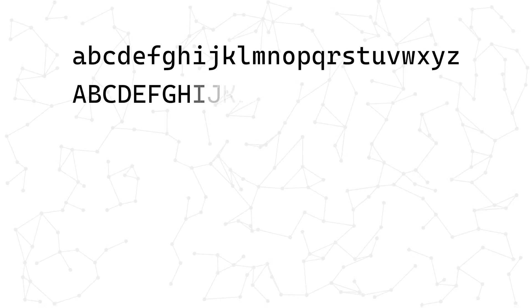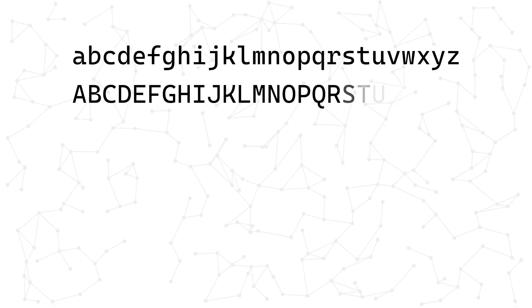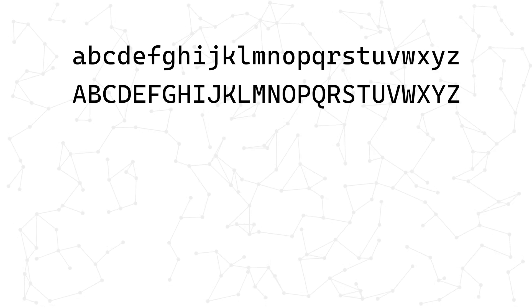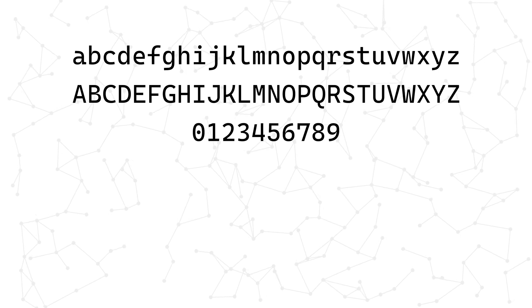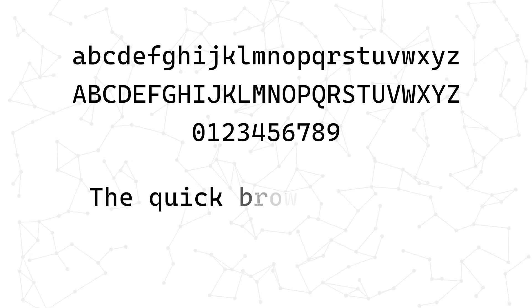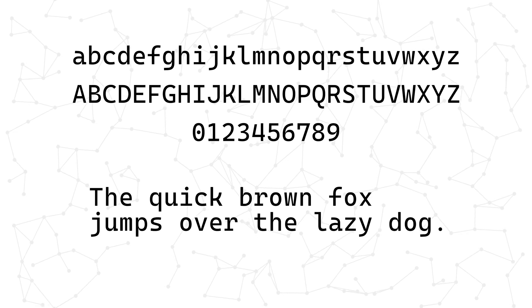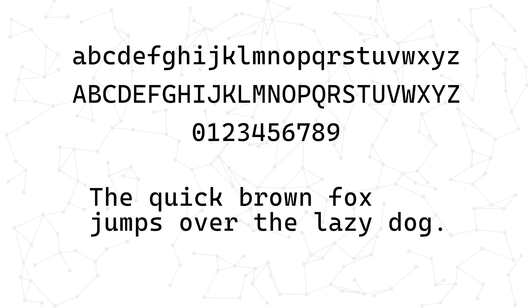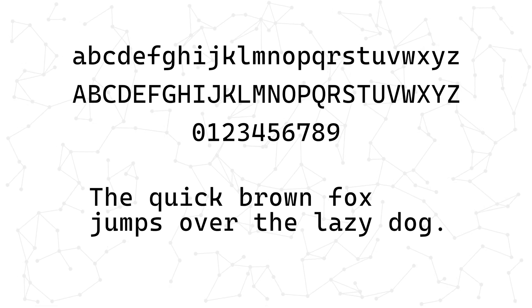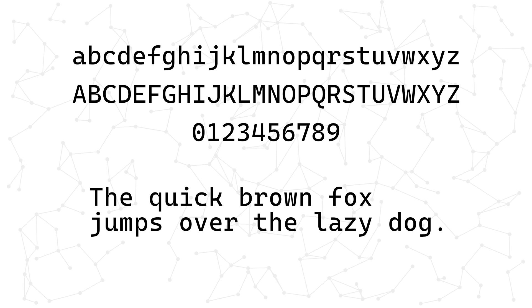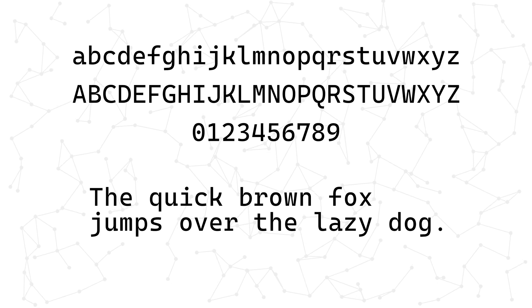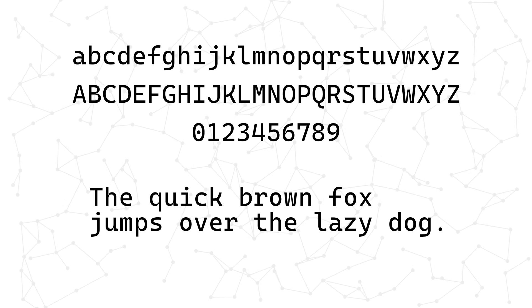Cascadia Code is an energetic monospaced font created by Microsoft, originally intended for Windows Terminal. It has a modern yet not too corporate look and feel to it, which makes it perfect for those long programming sessions. Each individual letter is a crisp, clear-cut design that looks beautiful on its own, but when presented in a file, you truly start to appreciate the beauty that emerges.